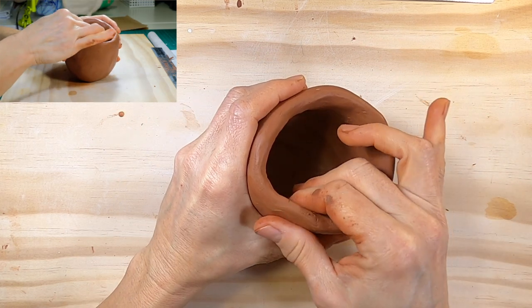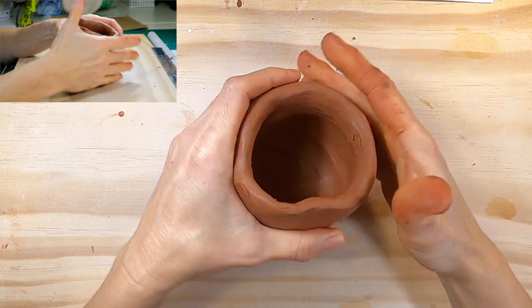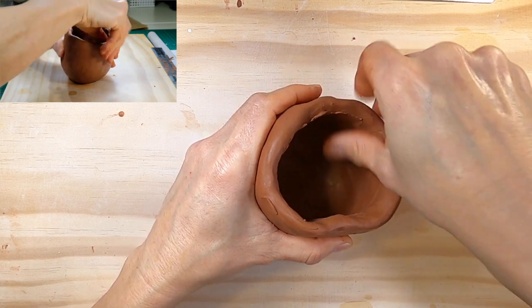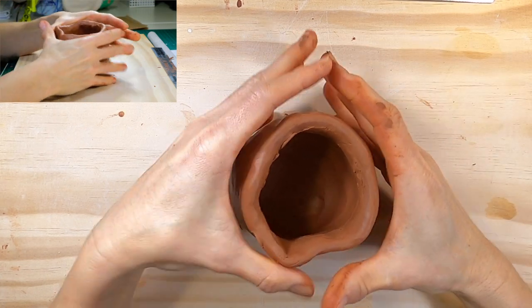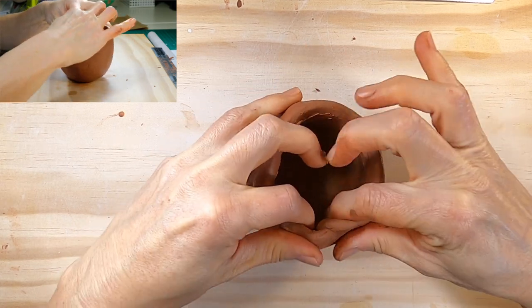Once the walls of the pot are about 1cm thick all over, you can start to shape it. Here I'm pushing the top edges inwards so the overall shape becomes more spherical. It's up to you what kind of shaping you do at this stage. Just make sure you work all around the pot, trying to keep the thickness of the walls the same all over.